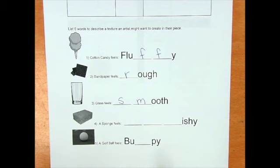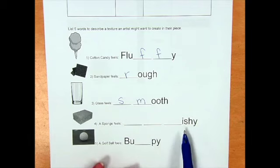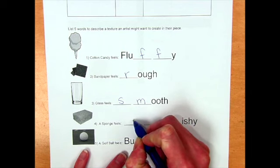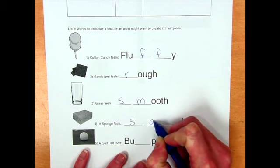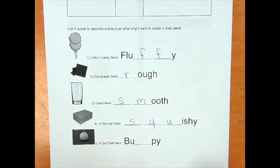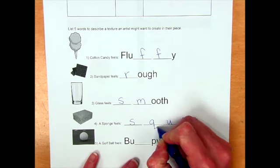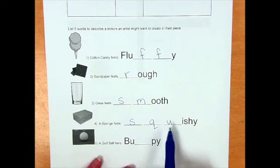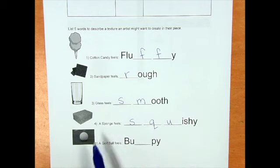Next, I have a picture of a sponge. Number four. A sponge feels something that ends with ish. I was thinking squishy. So squishy starts with three letters: S, Q, and U. So on your lines, you need S, Q, and U to make squishy. A sponge feels squishy, I guess if it's wet. Sometimes if it's dry, they can be kind of hard.